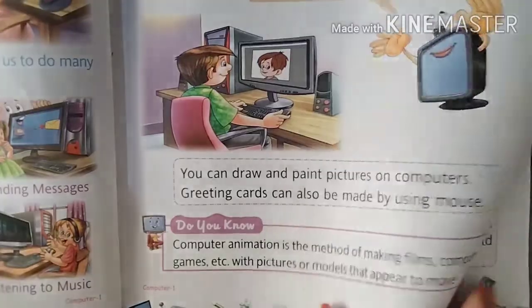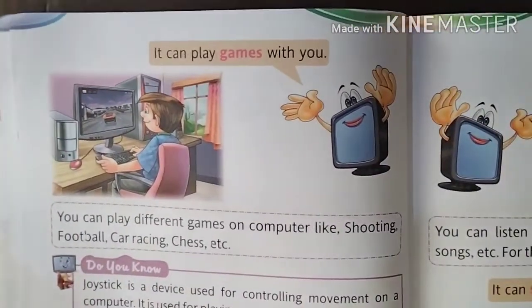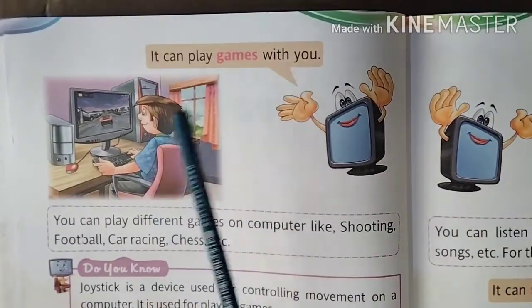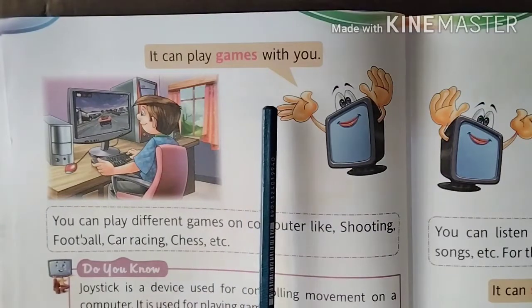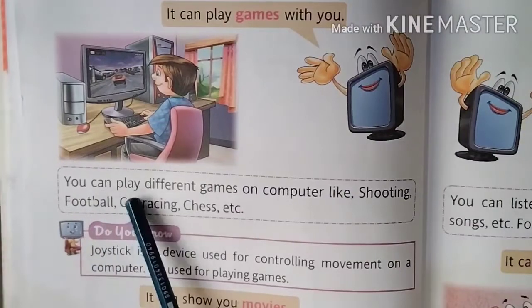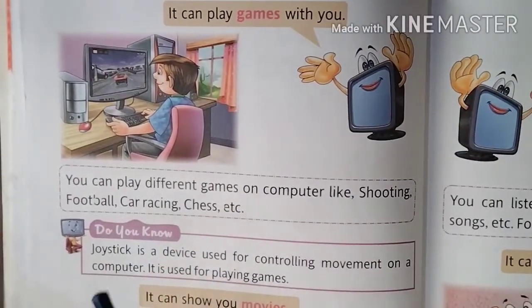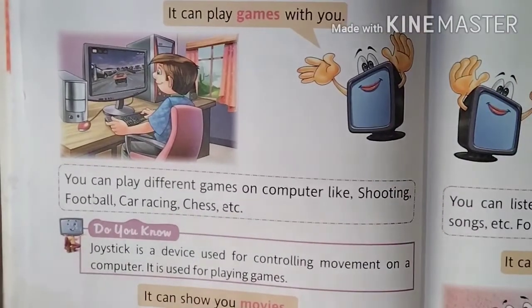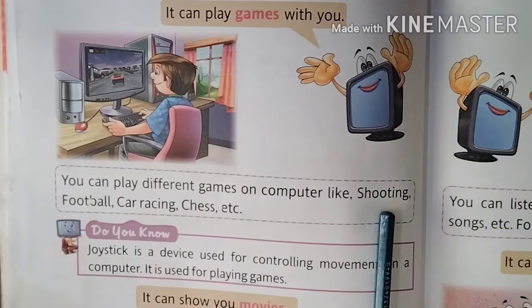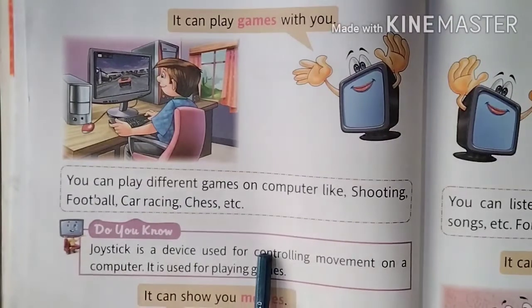Come to next page, page number 16. Next is: it can play games with you. On a computer, we can also play games. You can play different games on a computer like shooting, football, car racing, chess, etc. So computer games like shooting, football, car racing, and chess — these are all games we can play on a computer.